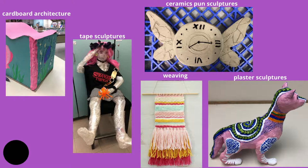Life-size tape sculpture — this is actually human size. A ceramic sculpture which would be painted; this was just the version before it was glazed. Weaving and plaster sculptures are also options. And again, there might be some new and different options if you join next year.